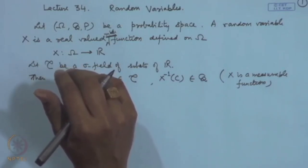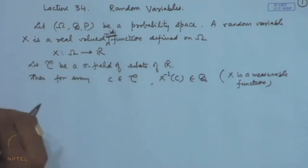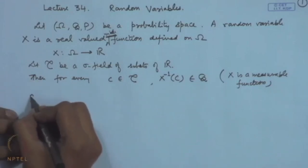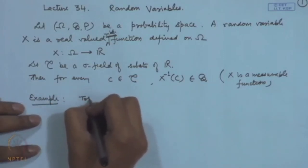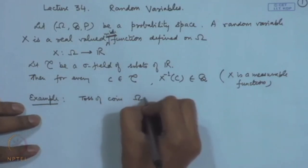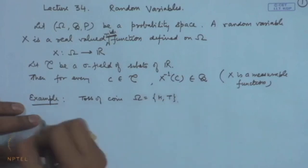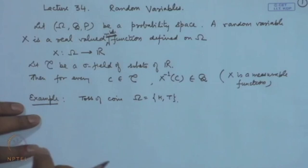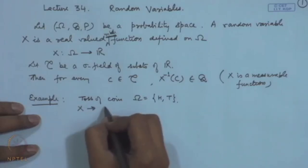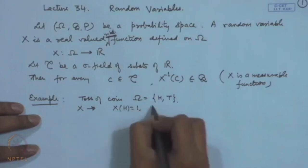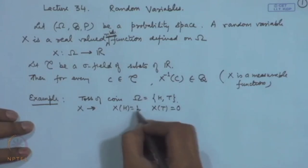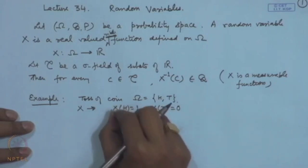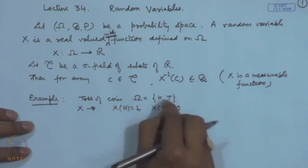First, let us consider the types of random variables. Consider the toss of a coin. If you toss a coin, you can consider head or tail. If we are interested to know whether a head has occurred, we can define a random variable X such that X(H) = 1 and X(T) = 0. This means: if a head has occurred, the indicator is 1; otherwise the indicator is 0. From the value of X, you can determine whether a head occurred or not.